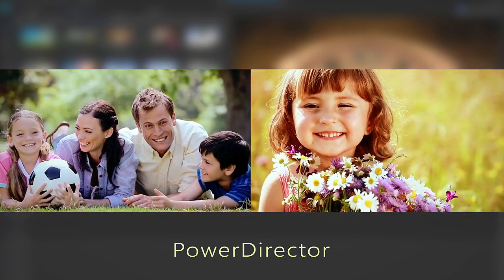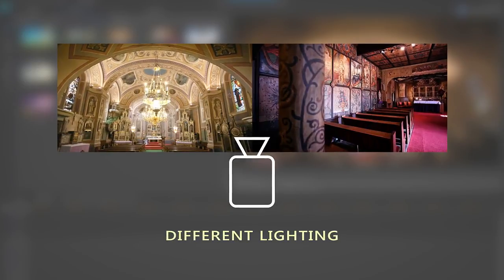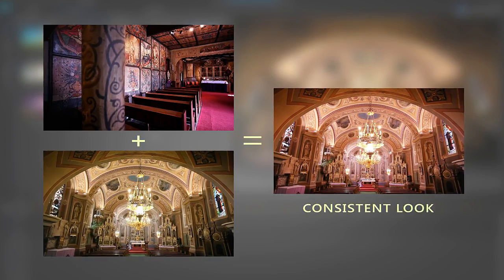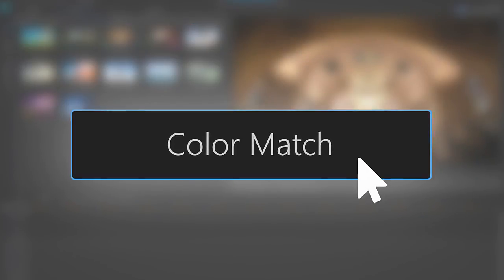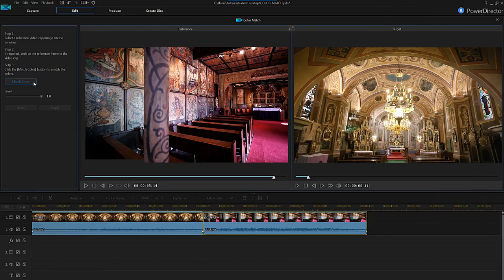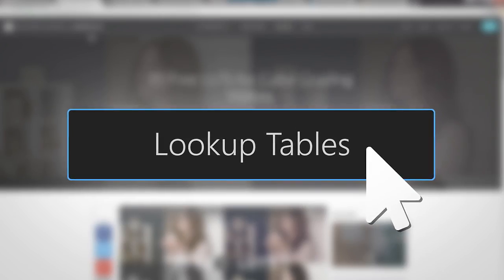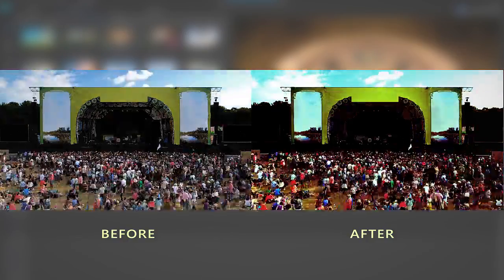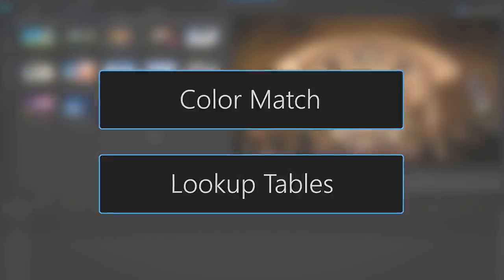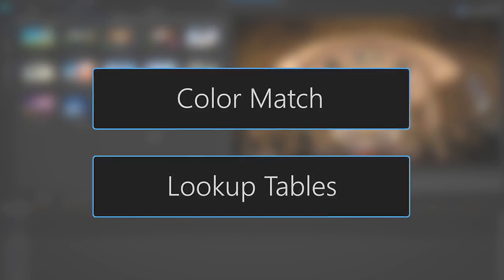PowerDirector offers two great ways to match the color of video footage taken from different cameras or lighting situations, so you can ensure a consistent look across a project. The first option is using color match to copy the color range of one clip to another. The second option is to use lookup tables or LUTs to apply a specific color range across different clips. Let's start with color match.